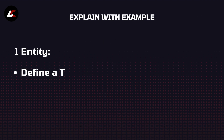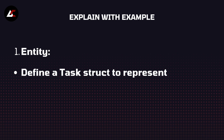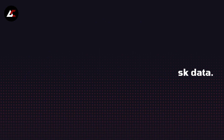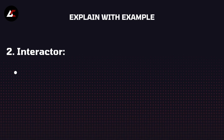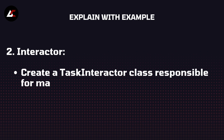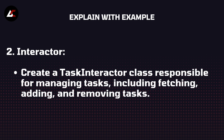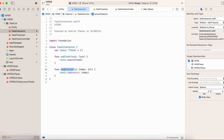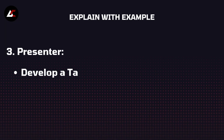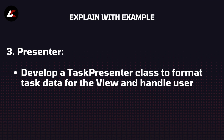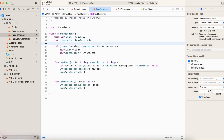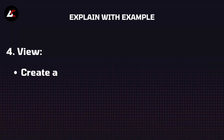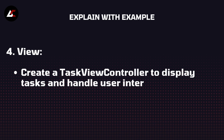I will explain with a live example. Entity: define a Task structure to represent task data. Interactor: create a TaskInteractor class responsible for managing tasks including fetching, adding, and removing tasks. Presenter: develop a TaskPresenter class to format task data for the view and handle user interactions. View: create a TaskViewController to display tasks and handle user interactions.